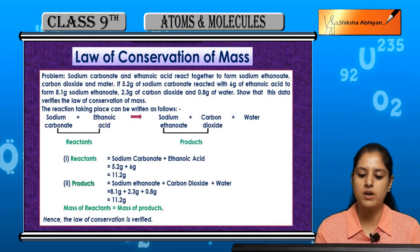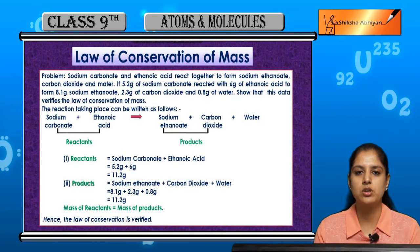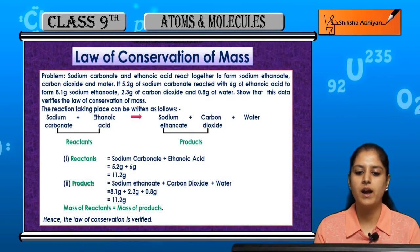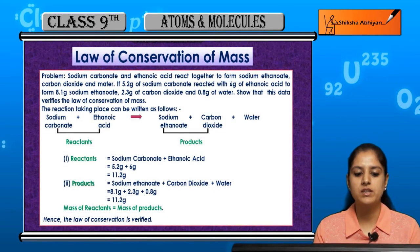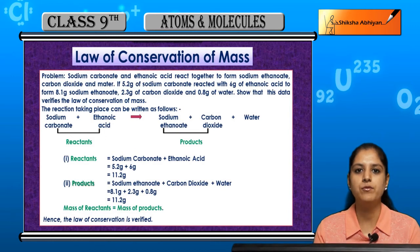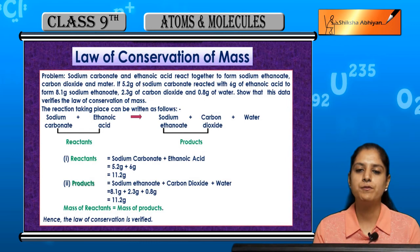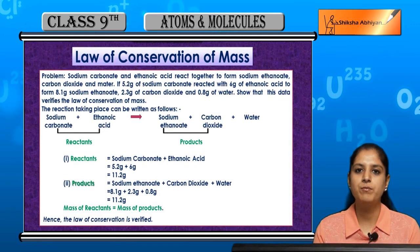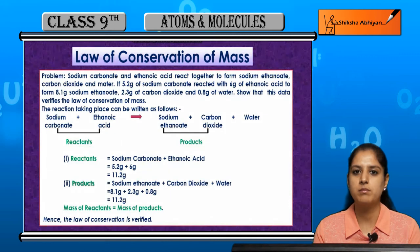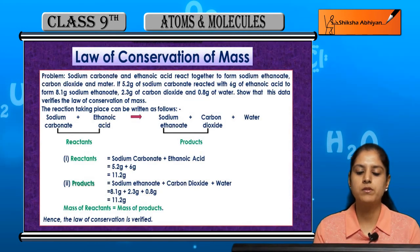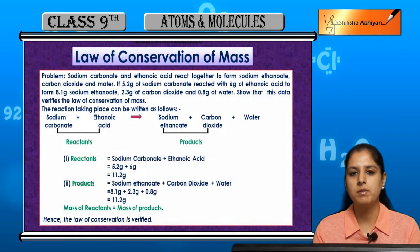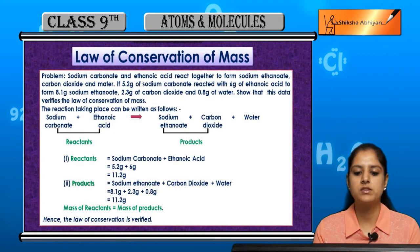Let us see an example of a numerical based on this. Sodium carbonate and ethanoic acid react together to form sodium ethanoate, carbon dioxide and water. Ab is reaction ke andar: sodium carbonate and ethanoic acid ye dono reactants hai, jo combine hokar sodium ethanoate, carbon dioxide aur water form kar rahe hai — yeh 3 products form kar raha hai. So 5 things hamare paas hai: 2 reactants and 3 products. Now if 5.2 grams of sodium carbonate reacted with 6 grams of ethanoic acid to form 8.1 grams of sodium ethanoate, 2.3 grams of carbon dioxide and 0.8 grams of water. Show that this data verifies the law of conservation of mass.